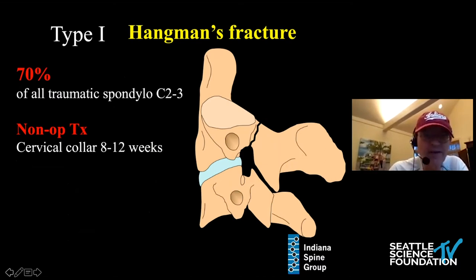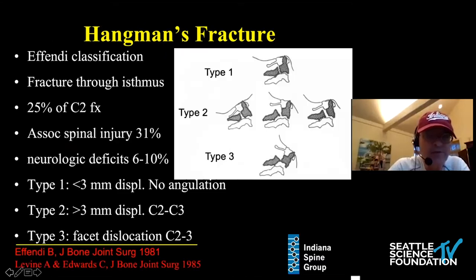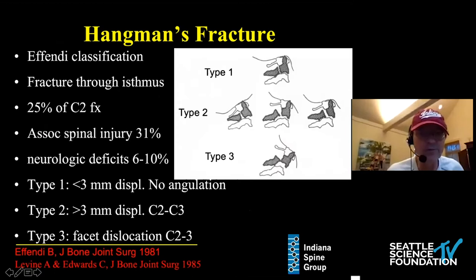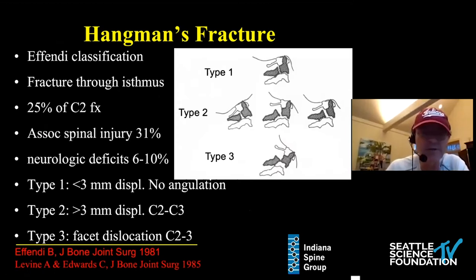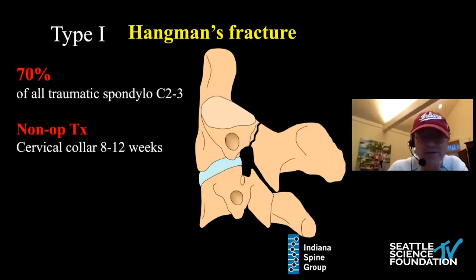Effendi described a classification system about 40 years ago that has basically withstood the test of time. Type 1 fractures are non-displaced fractures. Type 2 fractures have displacement greater than three millimeters with some disruption of the C2-C3 disc space. And type 3 fractures involve a facet dislocation at C2-C3.